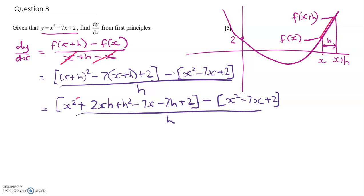Right, I can see that x squared will cancel with that one. I've got minus 7x canceling there, and I've also got 2 canceling over there. So then I'm going to have, on the top, 2xh plus h squared minus 7h over h. I can divide h through by each function.